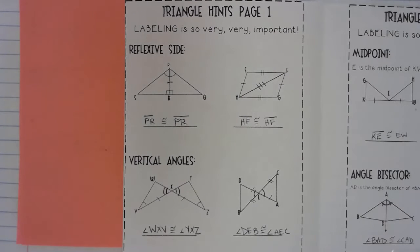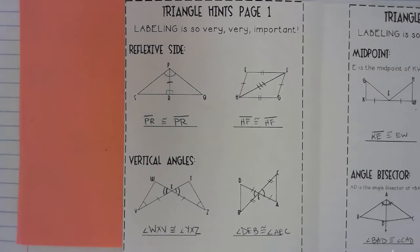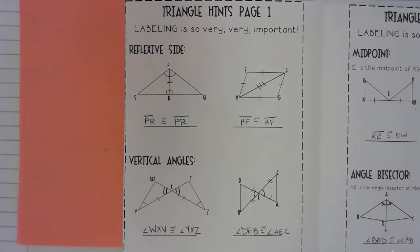Continuing on in our unit about triangles, this is section 5.3. In 5.2, we talked about if I have two triangles that are congruent — already determined to be congruent — then they have corresponding parts that I can line up with one another. So now let's talk about how do I determine if two triangles can be congruent? What are the special tests that two triangles have to pass?